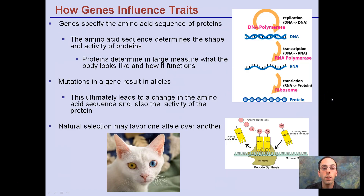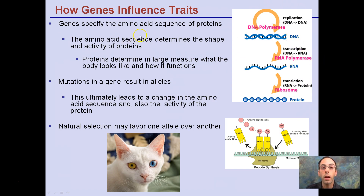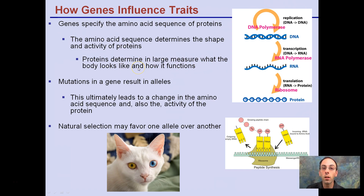How genes influence traits — this is the central dogma, going from our DNA to our RNA to our proteins. The amino acid sequence determines the shape and activity of the proteins. Proteins determine in large measure what the body looks like and how it functions, potentially its color and basically its structure.